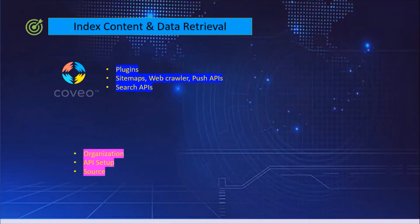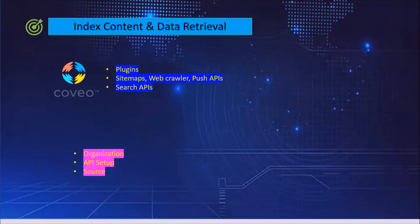To index and retrieve the content from Covio, we need a set of configurations within the Covio system. The major pointers are: we need to have an organization setup, an API setup properly configured with specific access levels, and a source through which we will be indexing and retrieving the data.